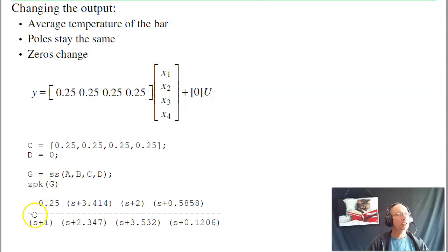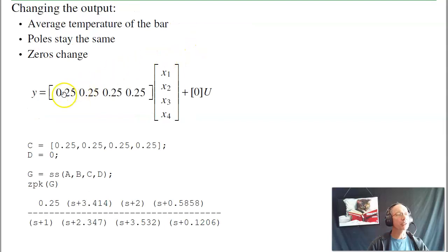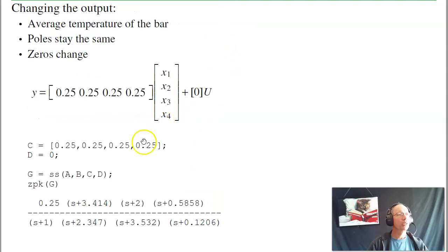Changing the output. In this case, where I picked off the state X4, this is the transfer function. If I change the output, make it the average of four voltages, change the C matrix, change the D matrix. A and B don't change when I change the output. Find the new transfer function. You notice the poles stay the same.